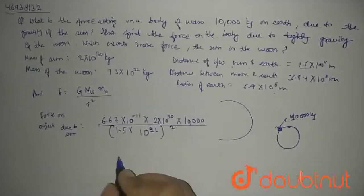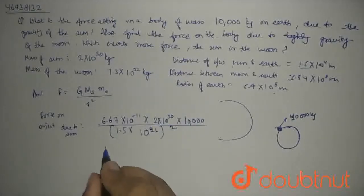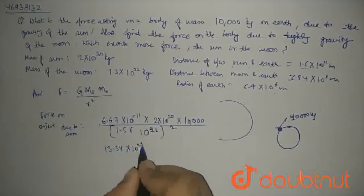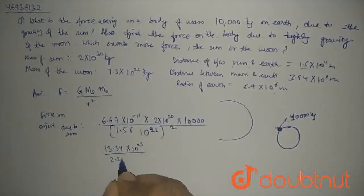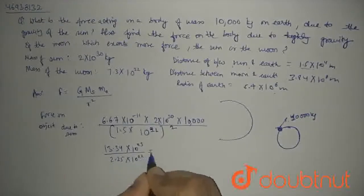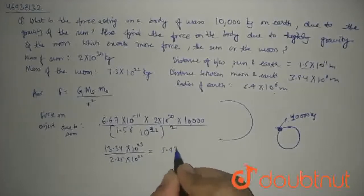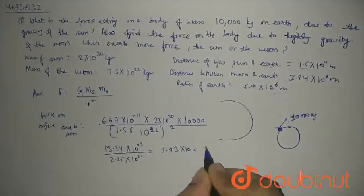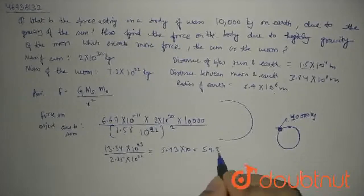When we solve this, we get 13.34 times 10 to the power 23 divided by 2.25 times 10 to the power 22, which gives us 59.3 newtons.